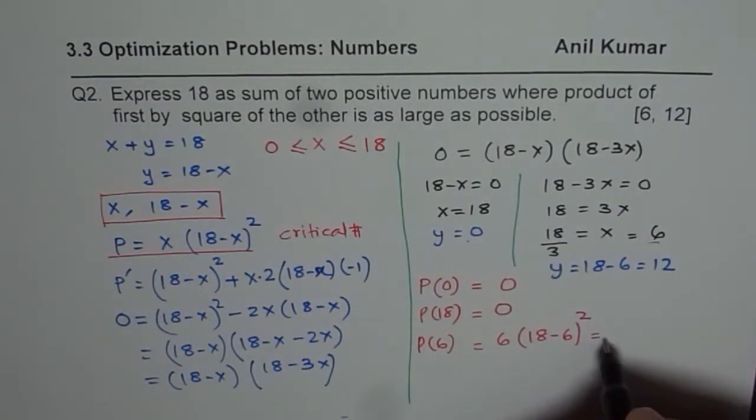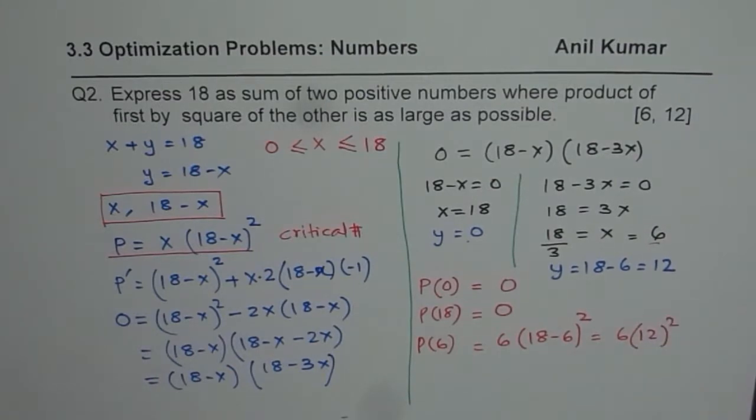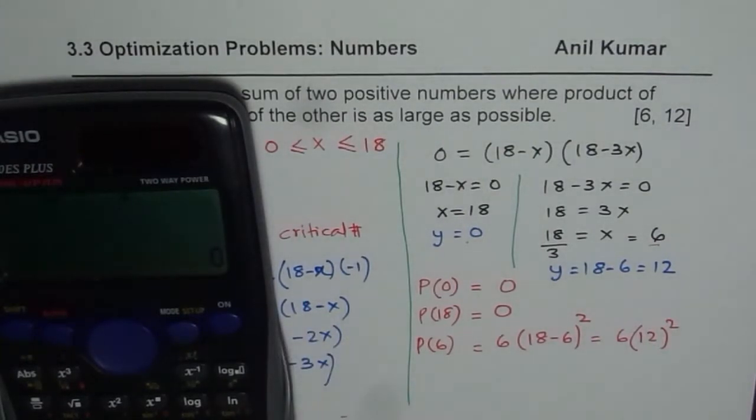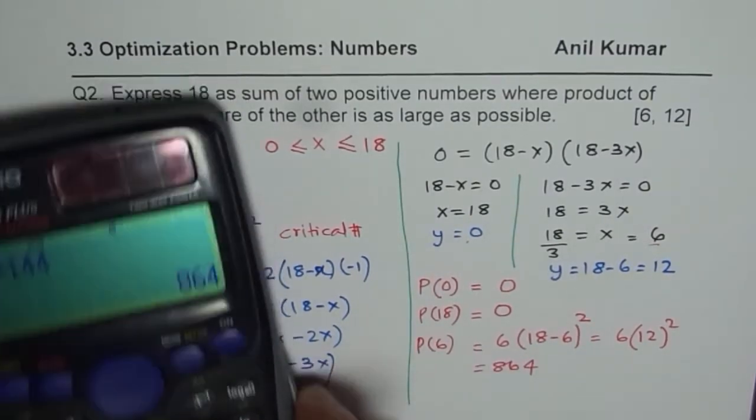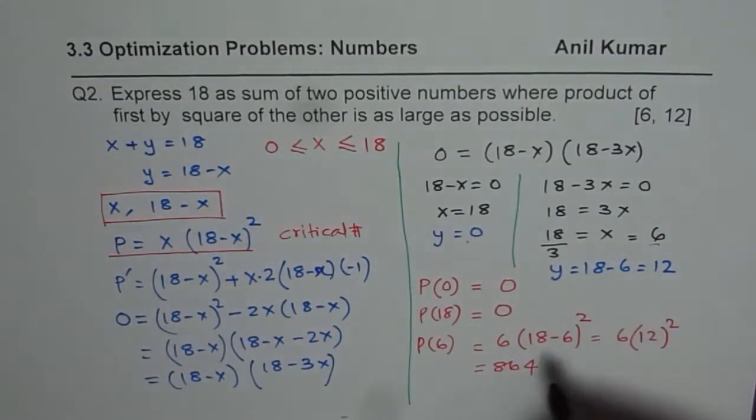It is equal to 6 times 12 square, which is 144. So we get 6 times 144 equals 864. So clearly that is the maximum product.